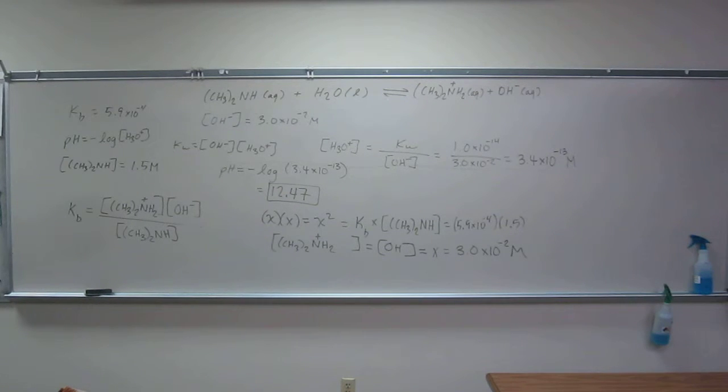So just like how we did at the ICE tables for the weak acids, we can do them for the weak base. Okay? Just remember, when we do it for the weak base, we're getting OH minus, and from there that's how we're getting our pH. We've got to turn it around to H3O plus. Okay? So is this a basic solution? This would be a basic solution, yeah.